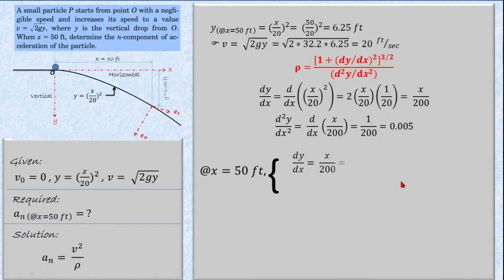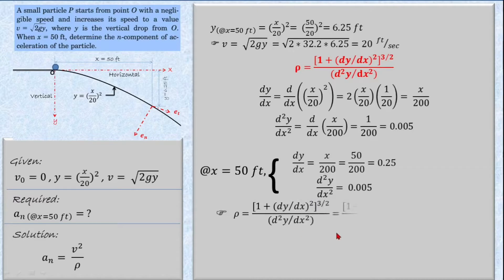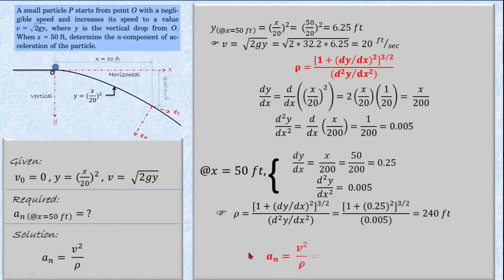Now we substitute the numerical values of dy/dx and d²y/dx² at x = 50 feet. For dy/dx, substituting x = 50 into x/200 gives 0.25. The second derivative d²y/dx² is constant at 0.005. Substituting these numerical values into the radius of curvature formula gives ρ = 240 feet.